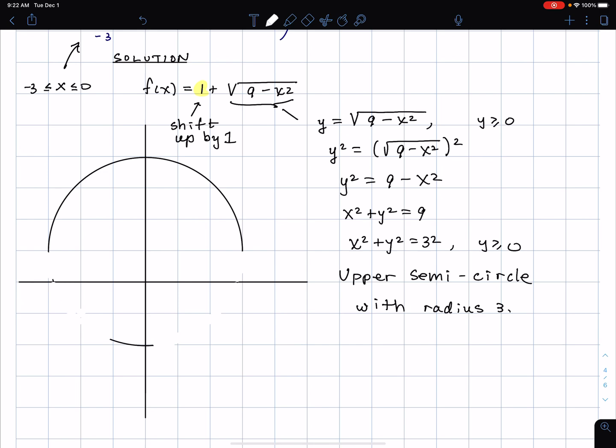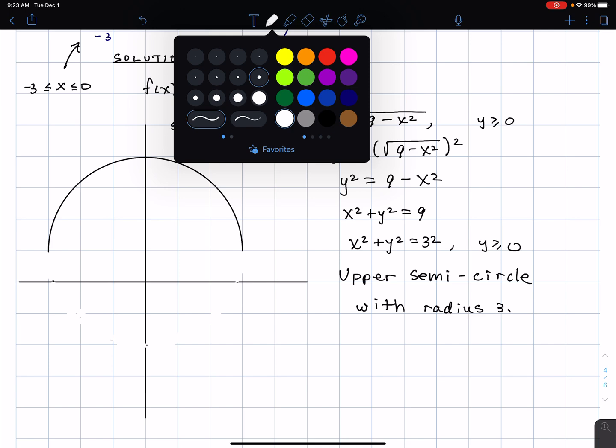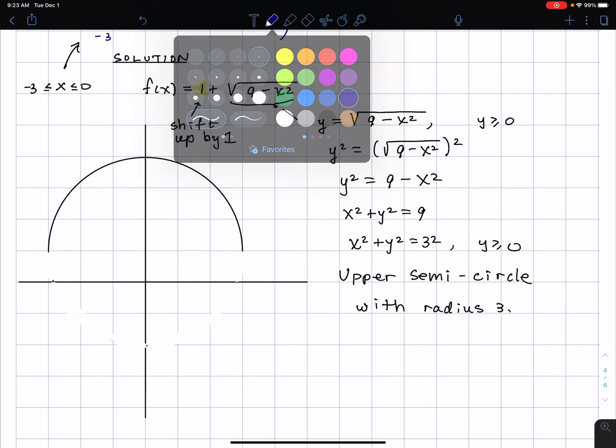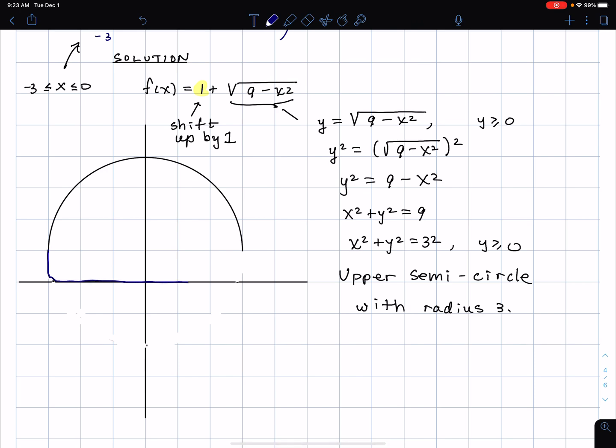So what we're going to do with this semicircle after I sketch the graph is we're going to find the area. Now, but it's a semicircle shifted up by 1, all right? So it's a semicircle shifted up by 1.